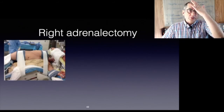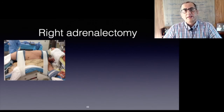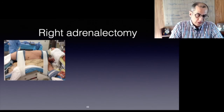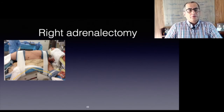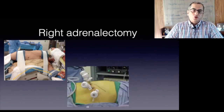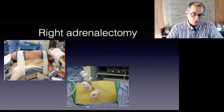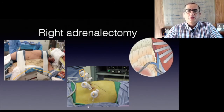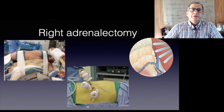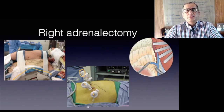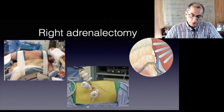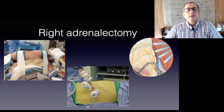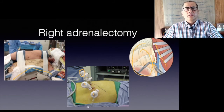For right adrenalectomy, the patient is positioned right side up with the table broken. Three to four ports are used. The peritoneum is divided two centimeters below the edge of the liver; the liver is retracted cranially off the adrenal gland. The gland is identified and mobilized gently, and the vein is secured with a clip. The gland is then removed in a plastic bag.